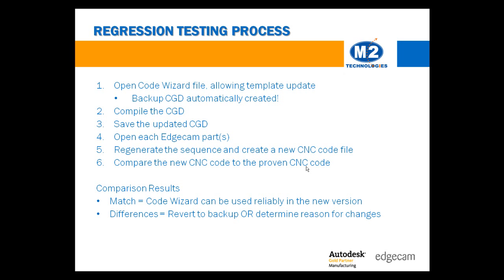You'll want to open the new code and your proven code and compare them for differences. Edgecam's editor provides ability to do this, and there are many other editors that have very good text comparison tools also. If there are no differences in the CNC code file, then the template update has not modified the proven code from your post. If there are differences, these may be due to new options that may need further work in the CodeWizard post. Even if there are no changes, you might want to consider adding support for newly available functionality. For example, Edgecam 2011-R2 adds pectap ability, which requires that the token for pecking be added to the appropriate output section of the CodeWizard.